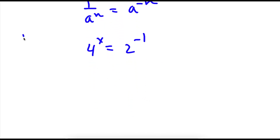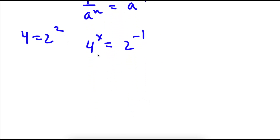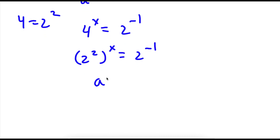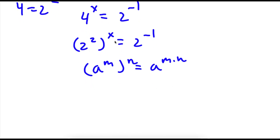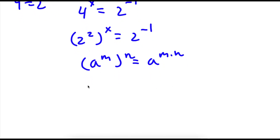Now 4 is equal to 2 squared. So if I replace 2 squared in for 4, I get 2 squared to the power of x is equal to 2 to the power of negative 1. Now if I have something in the form a to the power of m to the power of n, this is equal to a to the power of m times n. So 2 to the power of 2 to the power of x equals 2 to the power of 2 times x, which is simply 2x.